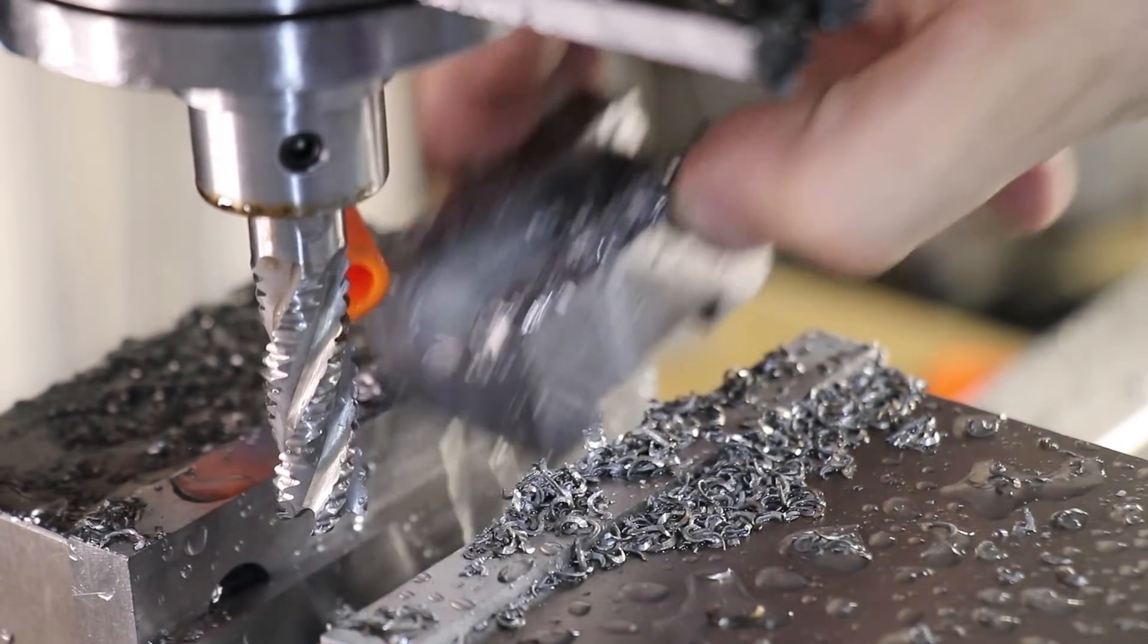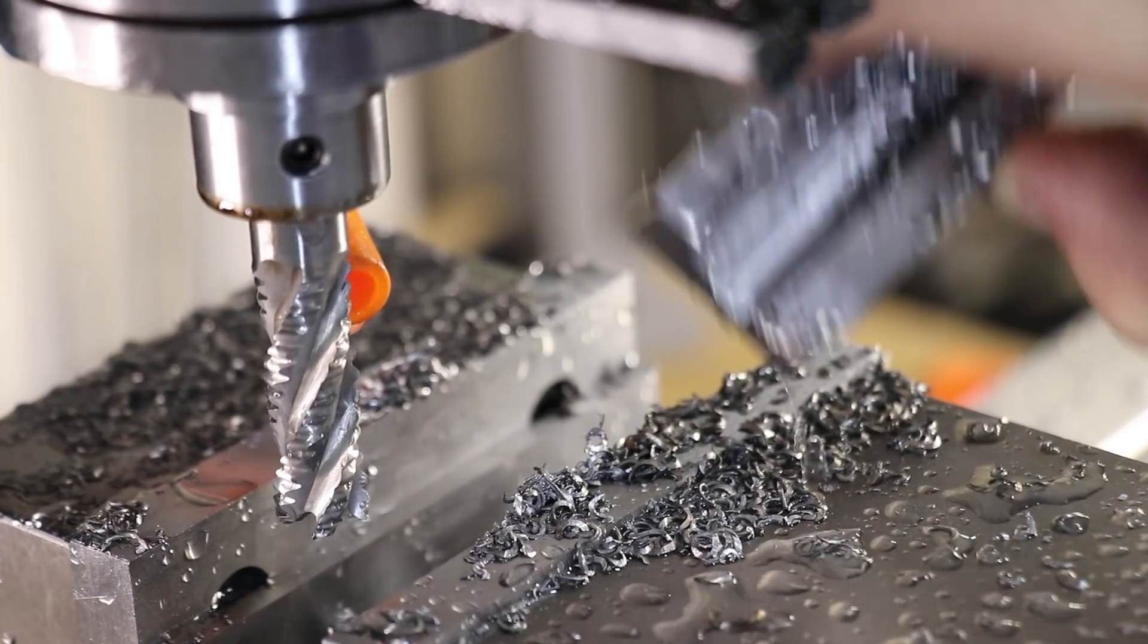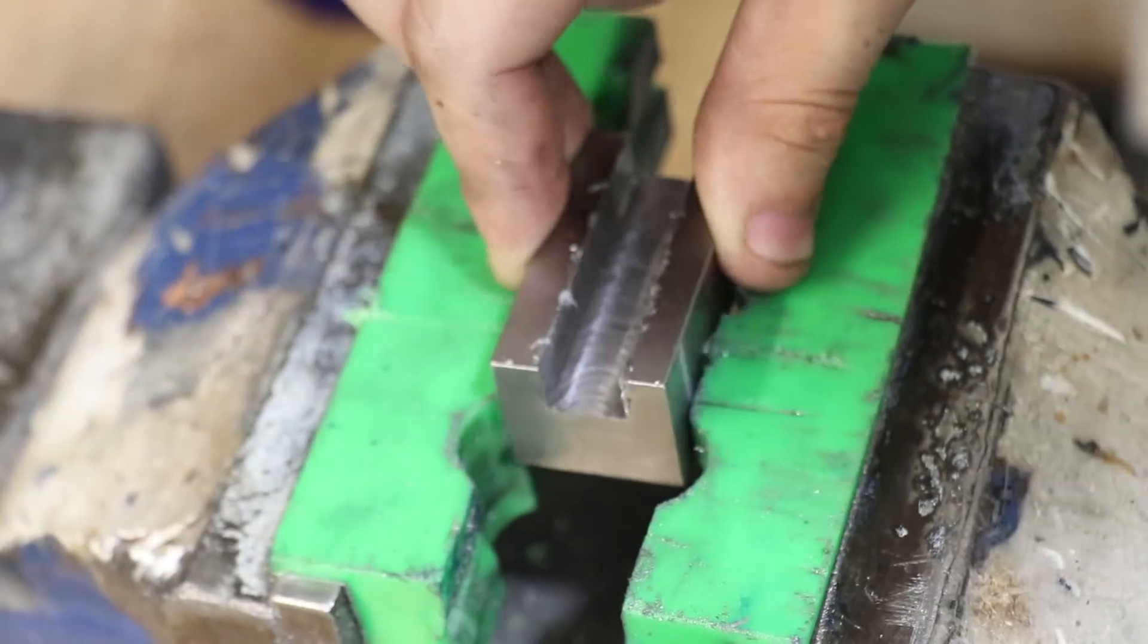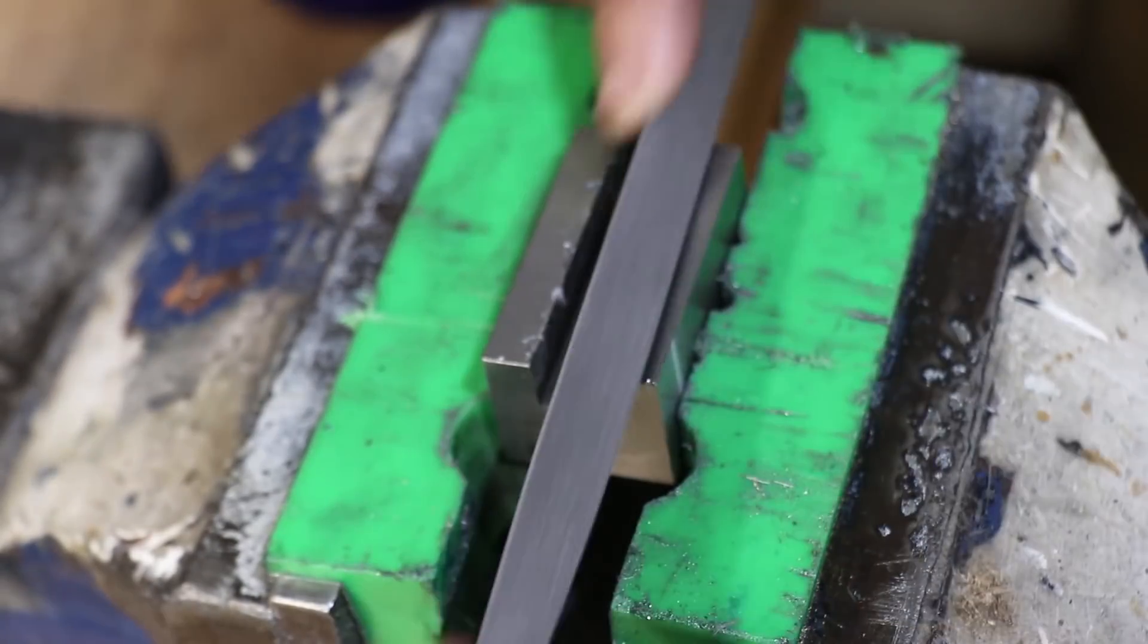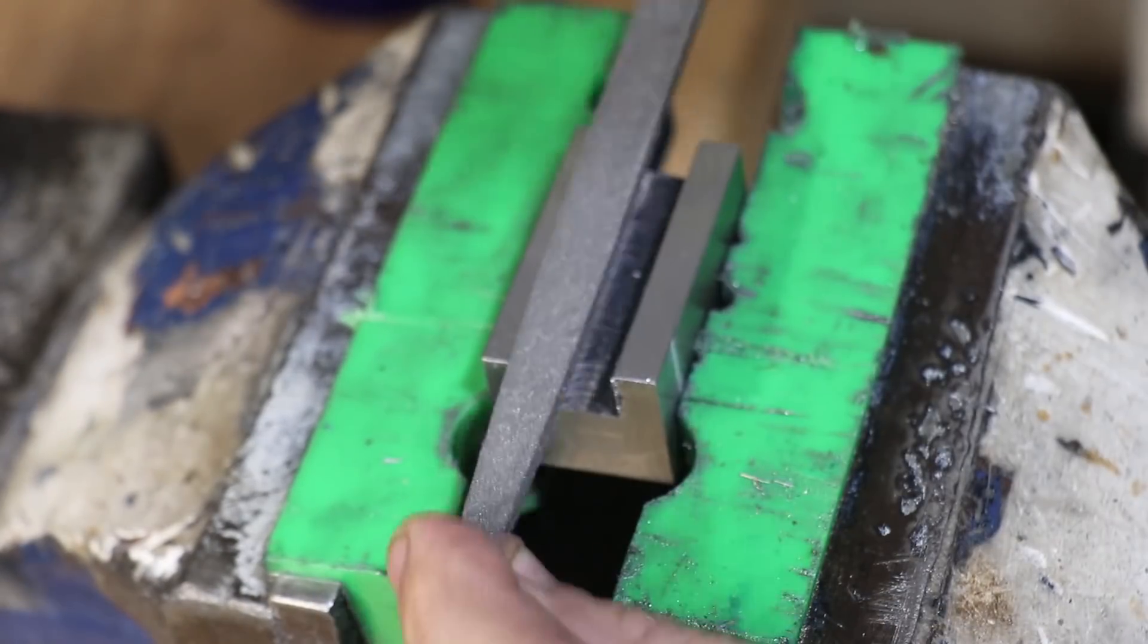With that done I'll give the part a quick deburr and then I'll break the inside corner using a hacksaw. In doing this I'll be able to properly seat the tool in the tool holder.